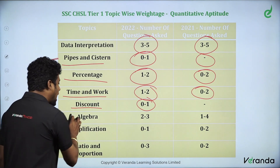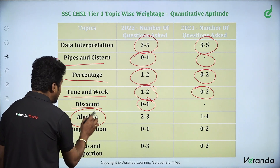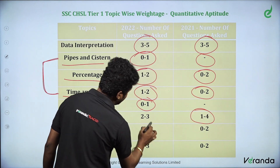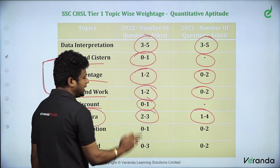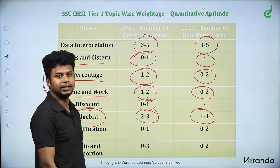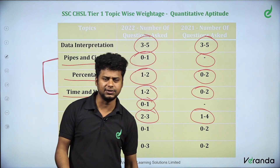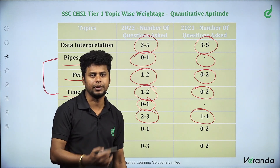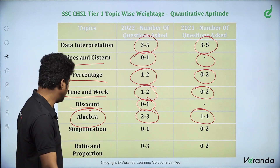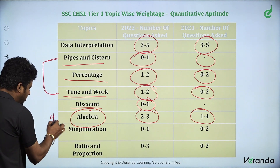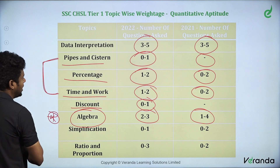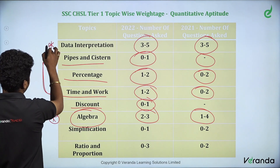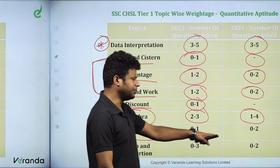What about Algebra? You can expect 1 to 4 questions, roughly 2 to 3 questions on Algebra. Algebra is also a very important topic when it comes to SSC. Data Interpretation and Algebra are both very important topics.